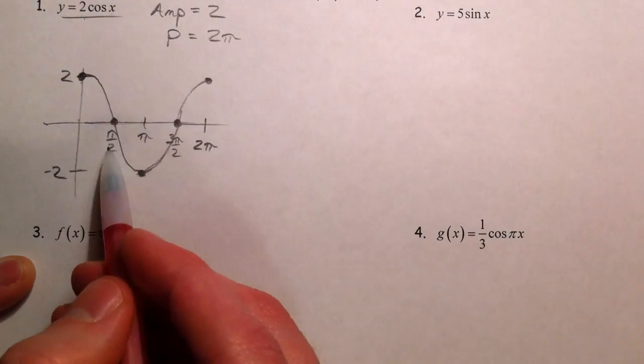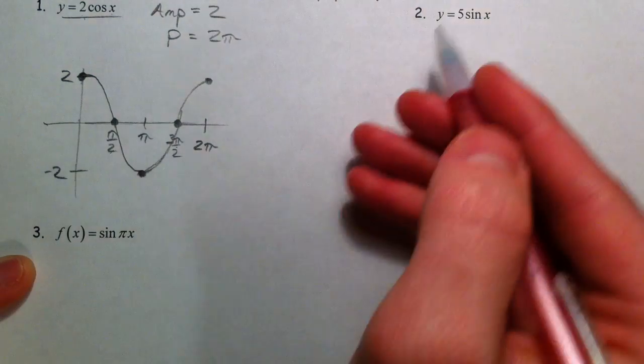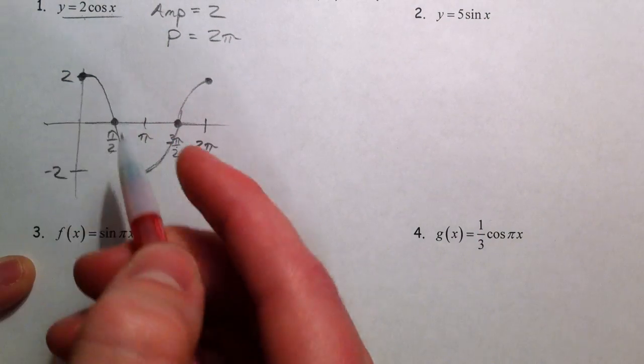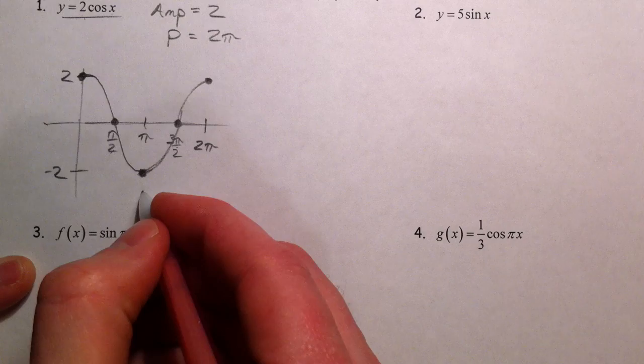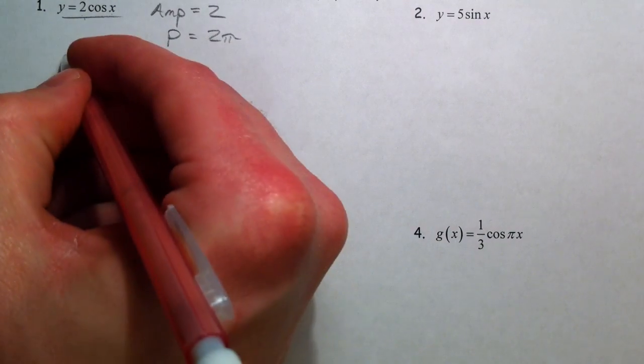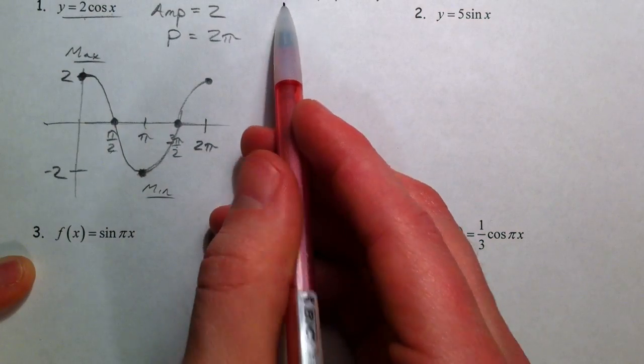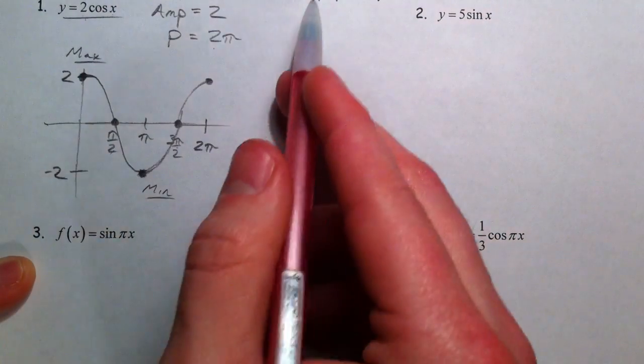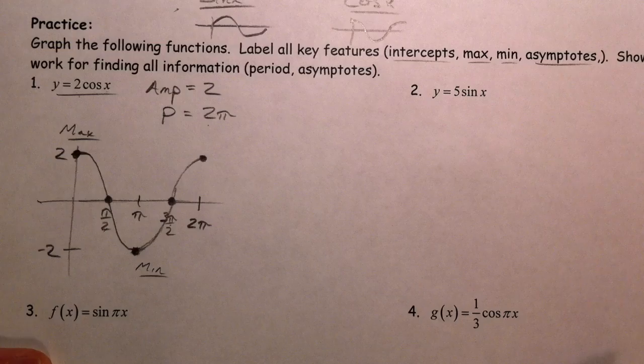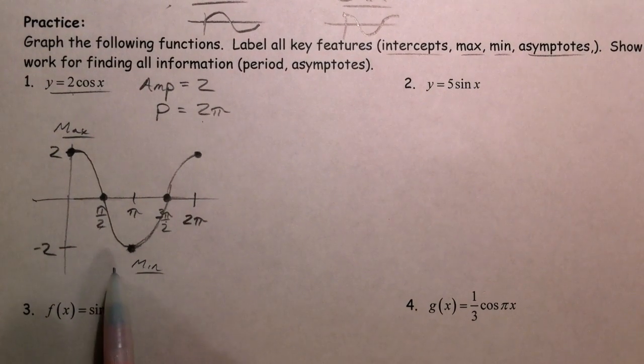So, labeling my intercepts, I've got my π over 2 and my 3π over 2, my max, I've got my max and my min. This is my minimum, this is my maximum. And my period is 2π, I don't have any asymptotes in this case. So 2 times cosine of x.